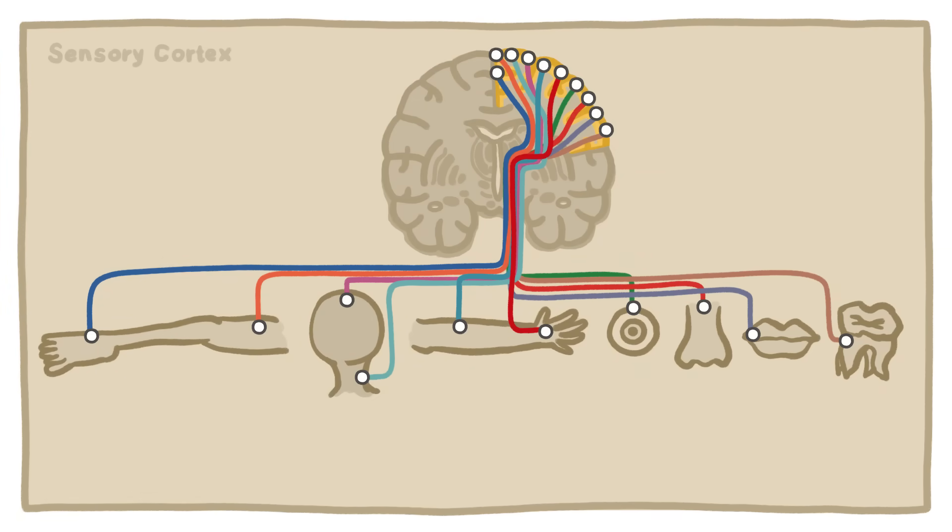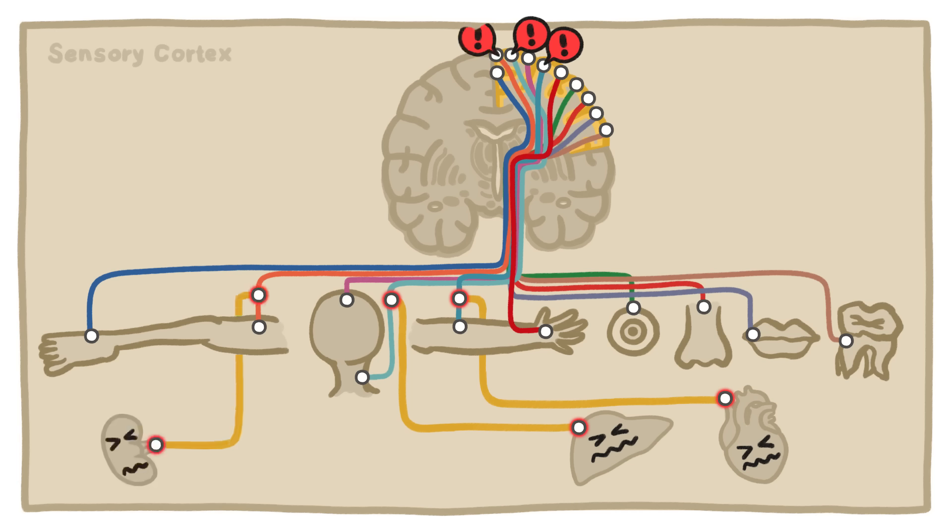This signal merging problem doesn't just happen with heart pain. Pain signals from the liver tend to merge onto tracts that end up in pain centers for the neck, and pain from the kidneys can merge onto tracts from the thighs.